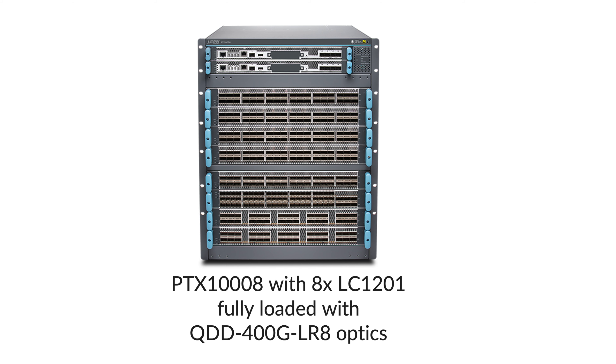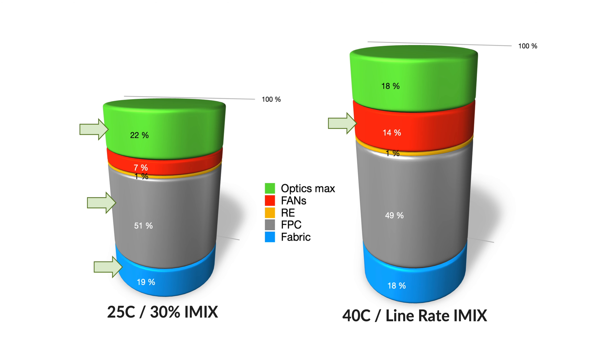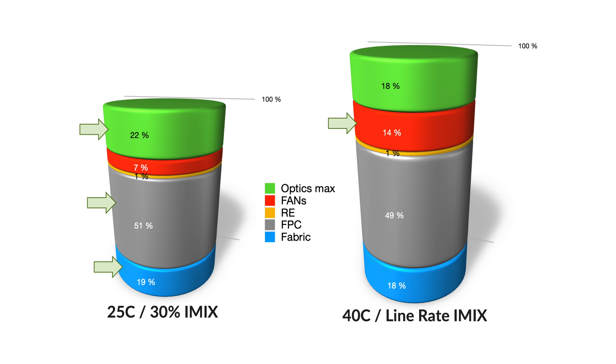The second example is another PTX — a modular chassis this time with 8 line cards, LC1201, fully populated with 400GB LR8 optics, 36 pluggables per slot. Comparing 30% traffic rate at 25°C to line rate at 40°C, you will still find that the PFE in the line cards are the top consumers and the optics are second. But the fabric cards in the chassis are consuming significantly more than a single ZF chipset in a pizza box, and the fan will consume twice more energy in the second case.